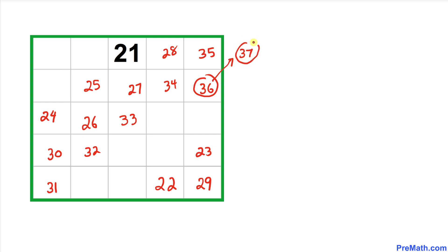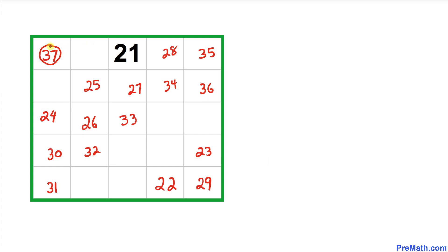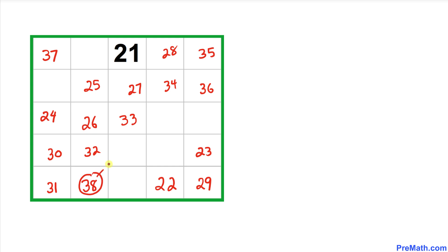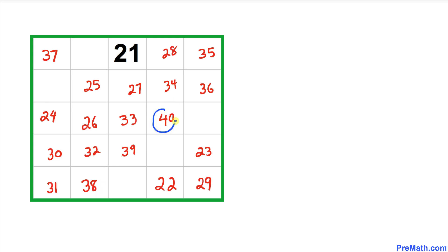From 36 we move diagonally to 37, but 37 is outside the square so it wraps to the opposite side. From 37 we move diagonally to 38, which is also outside the square and wraps to the opposite side. Then from 38 we move diagonally to place 39, and from 39 diagonally to 40.